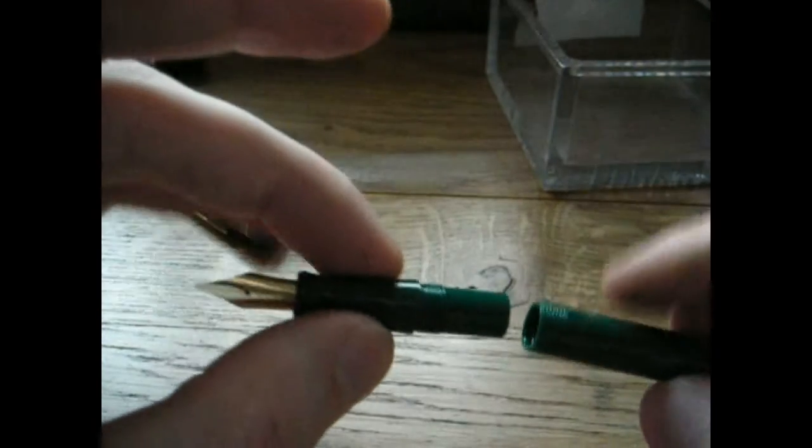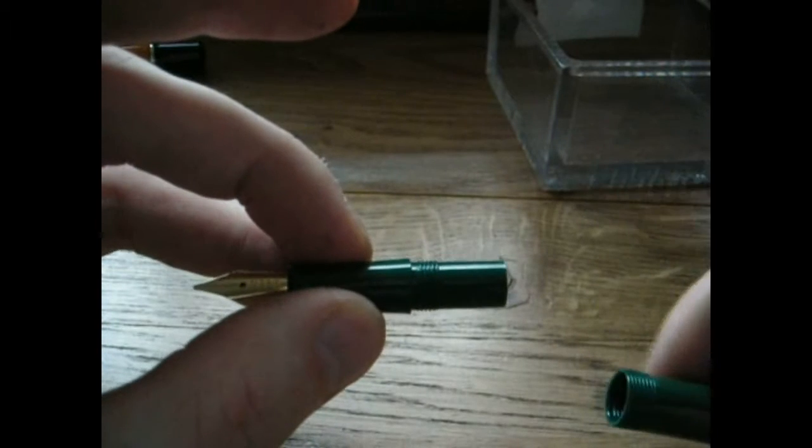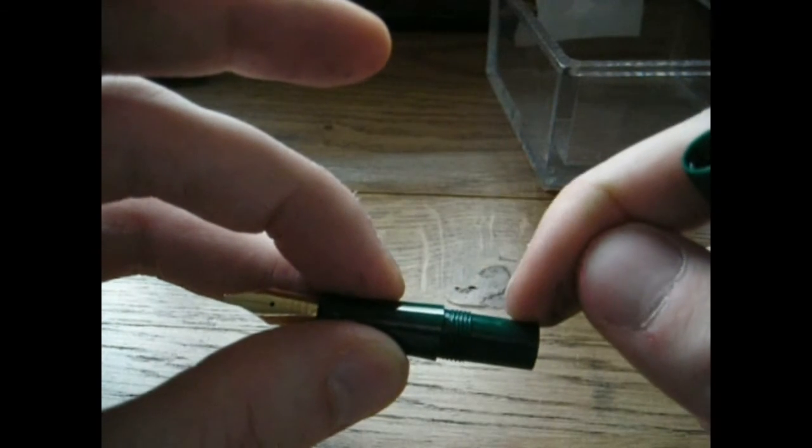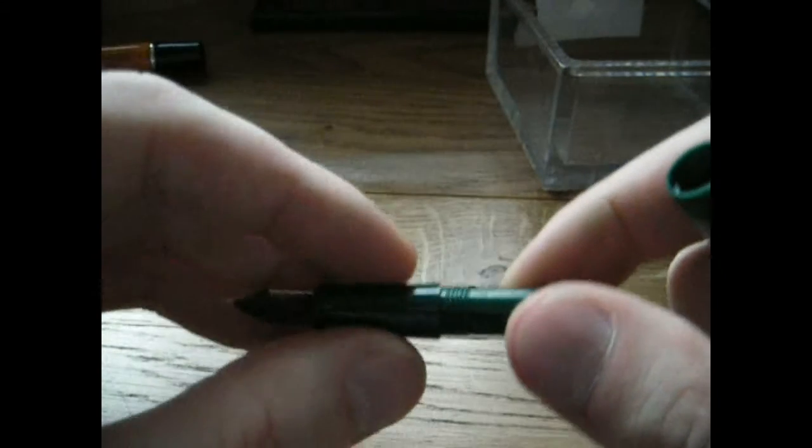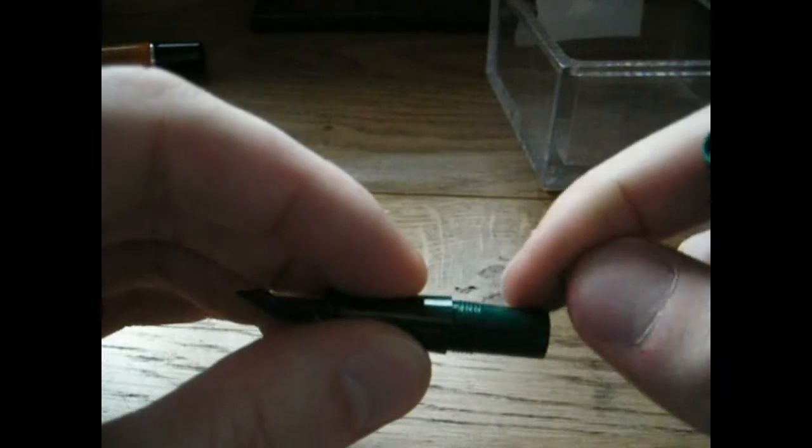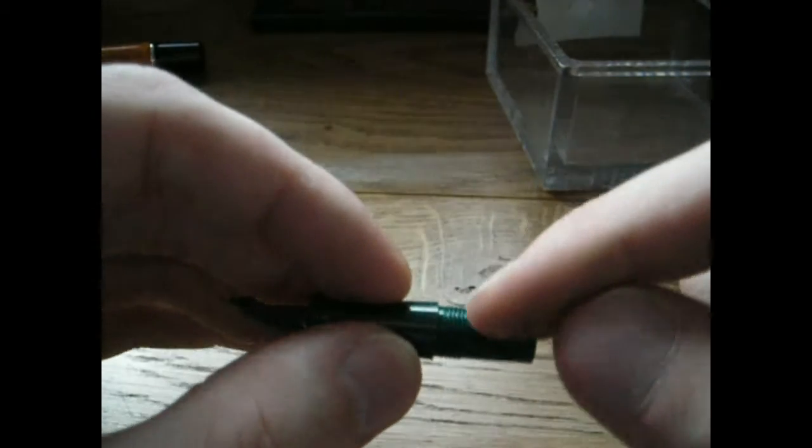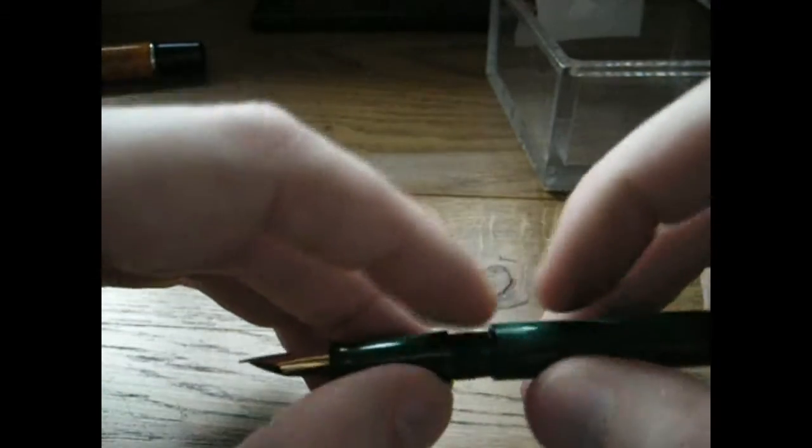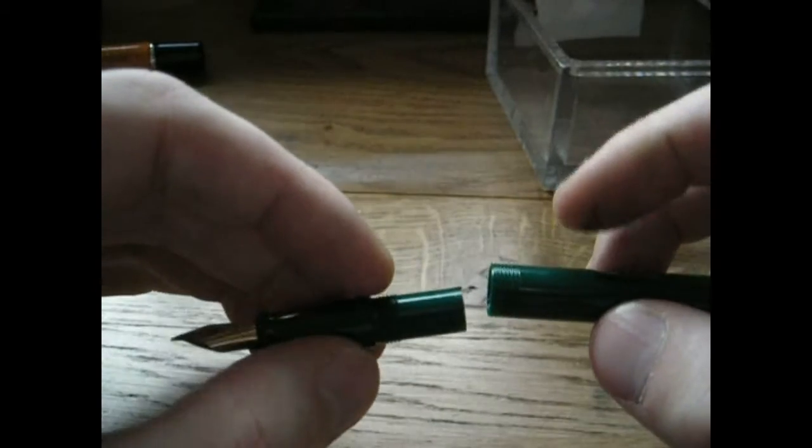Something nice about this pen, it has this long sort of tube thing going on there, which is very useful if you do an eyedropper conversion. You can smear silicon grease on that, and that's an extra buffer to make sure the ink doesn't flow out from the seal between the section and the barrel.